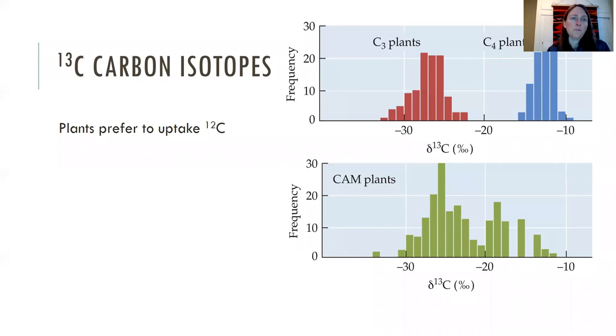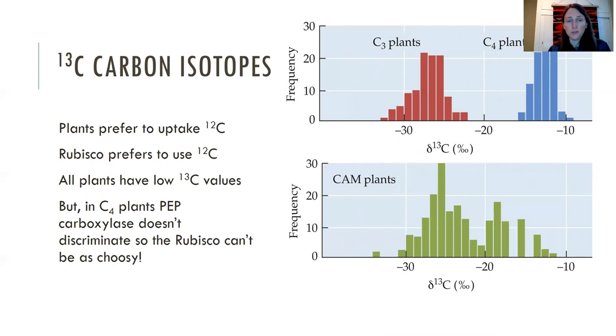So plants prefer to take up carbon-12. Rubisco prefers to use carbon-12. All plants have low carbon-13 values, lower than the atmospheric concentration, but in C4 plants PEP carboxylase doesn't discriminate, so then the rubisco just has to deal with it.